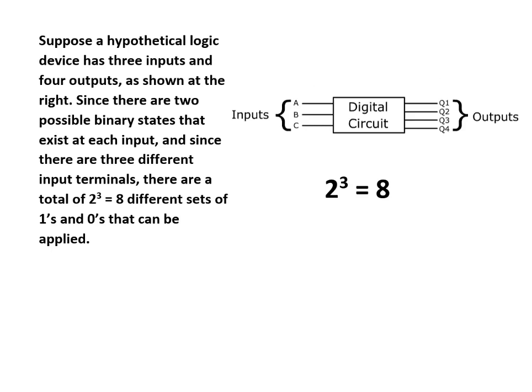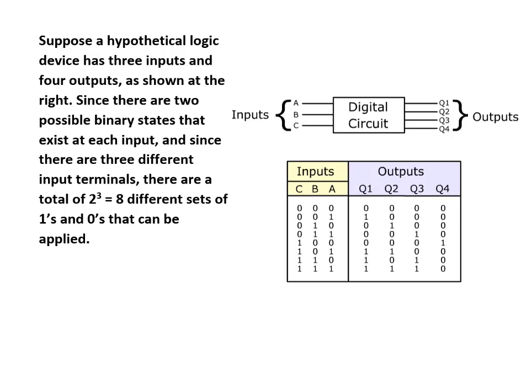Suppose a hypothetical logic device has three inputs and four outputs, as shown at the right. Since there are two possible binary states that exist at each input, and since there are three different input terminals, there are a total of eight different sets of 1s and 0s that can be applied.